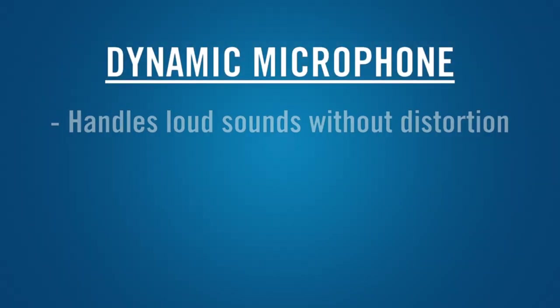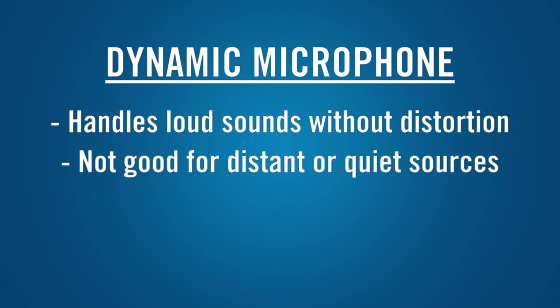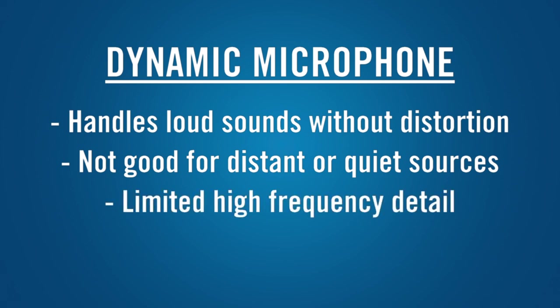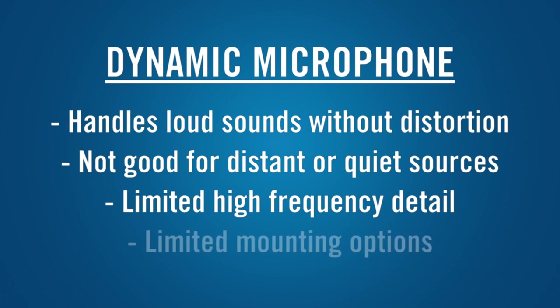Dynamic microphones can handle even the loudest sounds without overloading, but this also means that they're not well suited to distant micing of quiet sources. Because the sound waves have to move the mass of the diaphragm and the voice coil, they usually have limited high-frequency detail, so they're better for vocals or horns than for stringed instruments. The size of the magnet makes it difficult to make a dynamic mic very small, which can limit your mounting options.